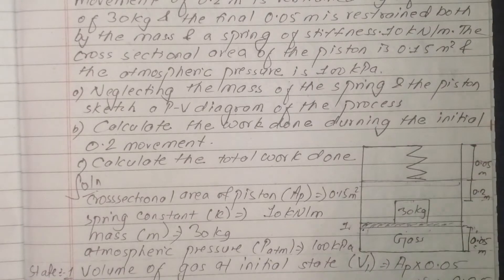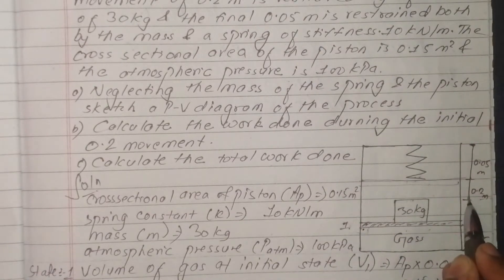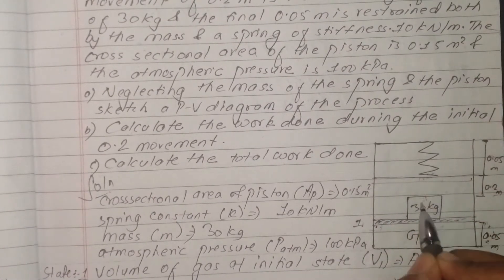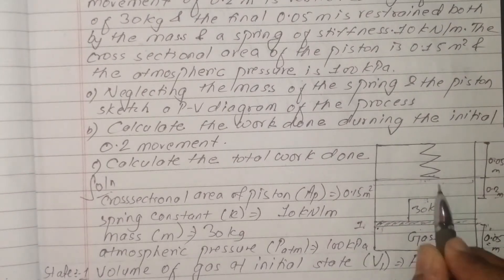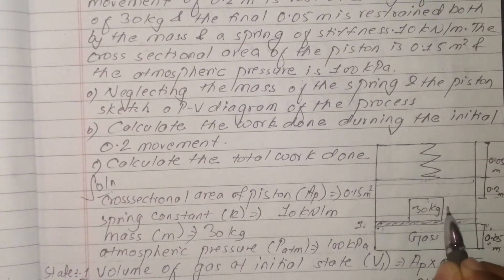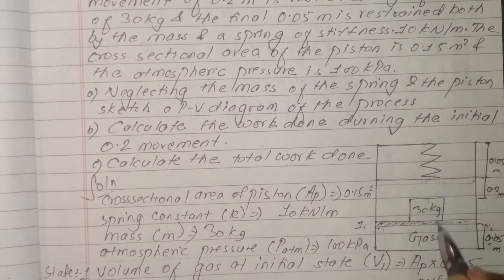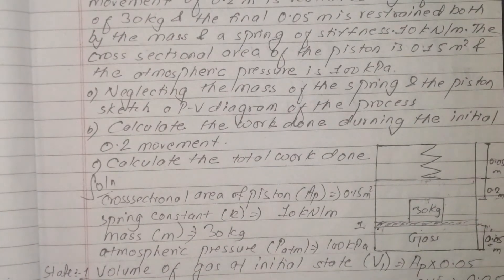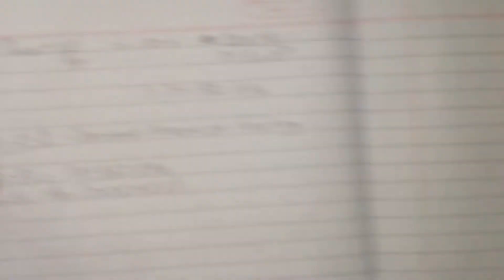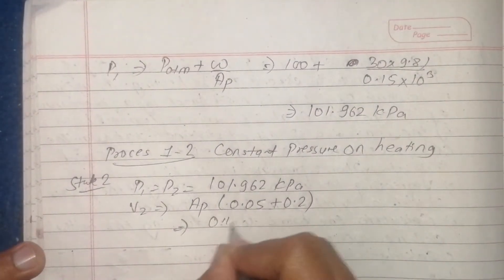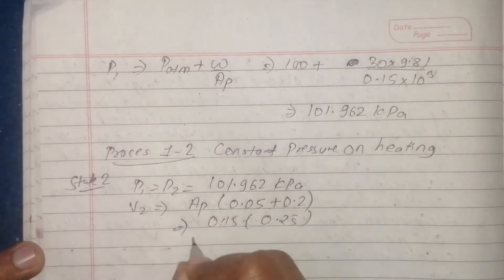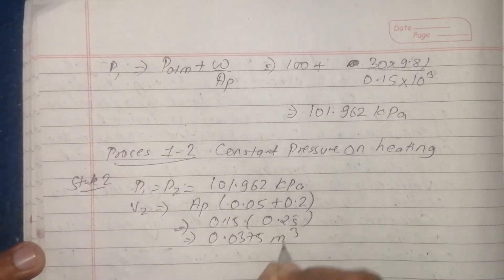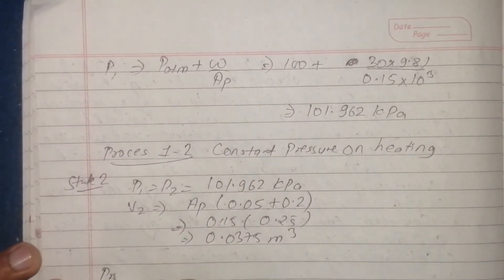For volume V2: the distance is 0.05 + 0.2 = 0.25 meters. V2 = A_p × 0.25 = 0.15 × 0.25 = 0.0375 meter cube.